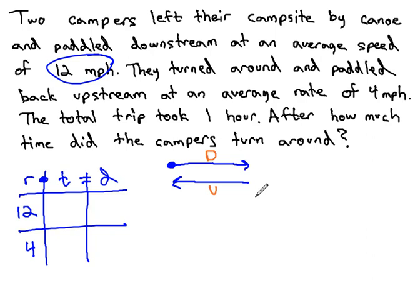The total trip took one hour. How much time did the campers turn around? We are given the total time of one hour. That does not represent one hour down and one hour back, because they would not make it back to their original spot, traveling so much faster downstream when the water is pushing them.